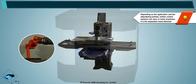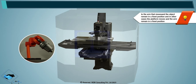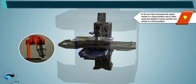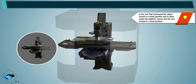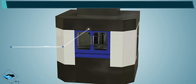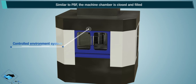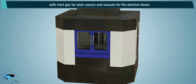In some machines, it is the deposition head attached to the arm that moves and the object remains in a fixed position; in other cases the platform moves and the arm remains in a fixed position. The machine chamber is closed and filled with inert gas for laser source and vacuum for the electron beam.